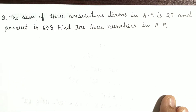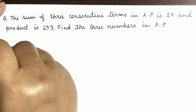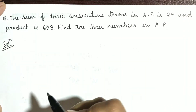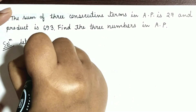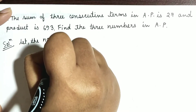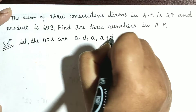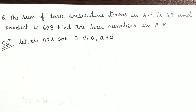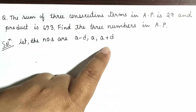Let us discuss the question. The sum of three consecutive terms in AP is 27 and product is 693. Find the three numbers in AP. Whenever this type of question is given, we always assume that let the numbers are A-D, A, and A plus D.